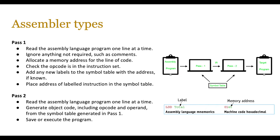Let's delve deeper into the two-pass assembler and look at what happens at each pass. In pass one, you read the assembly language program one line at a time; the assembler ignores anything not required such as comment statements. It allocates a memory address for the line of code, checks the opcode is in the instruction set, adds any new labels to the symbol table with the address if known, and places addresses of labeled instructions in the symbol table. In the second pass, it then reads the assembly language program one line at a time again.